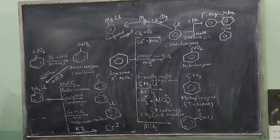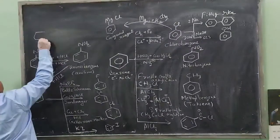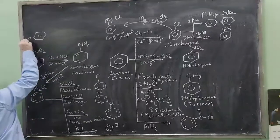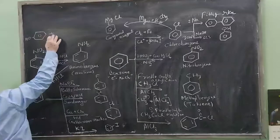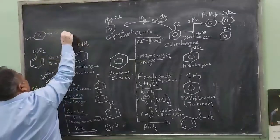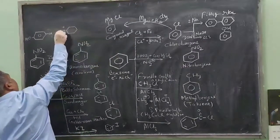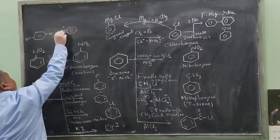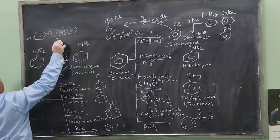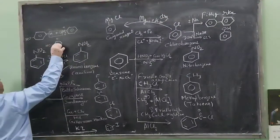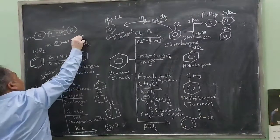If benzene diazonium chloride is made to react with phenol, then nitrogen comes out and forms an azo dye.